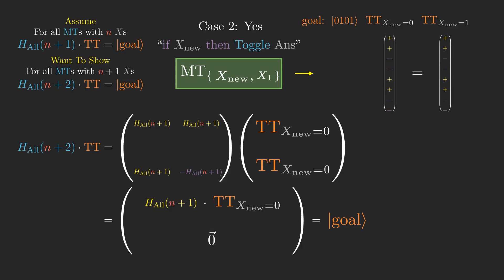Namely, since the value of x new now changes the result of answer, tt x new equals 0 and tt x new equals 1 are opposites of each other. This means that the result of the matrix multiplication now leaves h all of n plus 1 times tt x new equals 0 on the bottom half and the 0 vector on the top half. And using the same reasoning as before, we correctly get a goal state where this time there is a 1 in the first bit, since there is a line of code that says if x new then toggle answer.